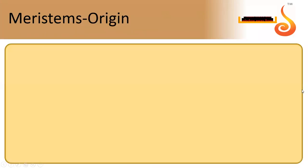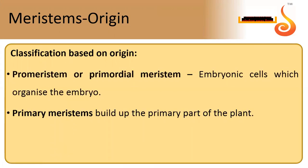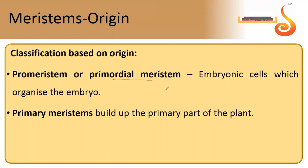Now let's see the classification of meristems based on origin — that is, from where the meristematic cells have arisen. We have three types. The first is pro meristem, also called primordial meristem. These are the ones that originated from embryonal cells. Embryonal cells arise from the zygote, which divides by mitosis to form a group of undifferentiated cells. Meristems arising from these embryonal cells are called pro meristems or primordial meristems.